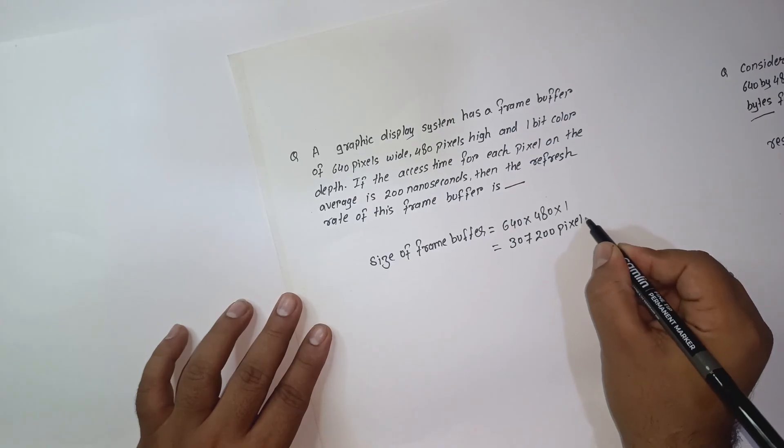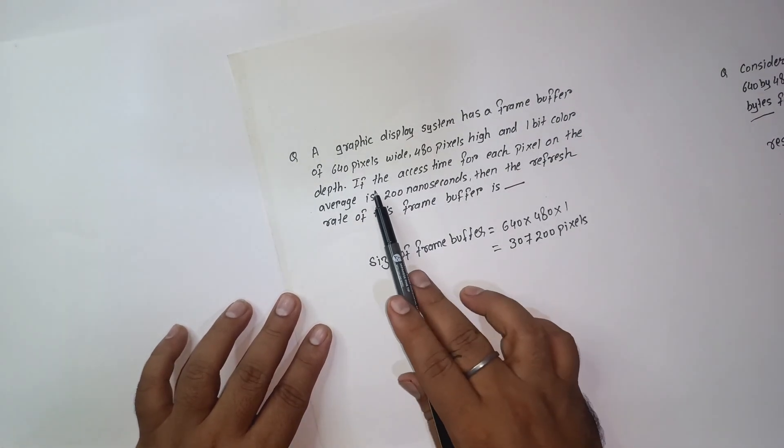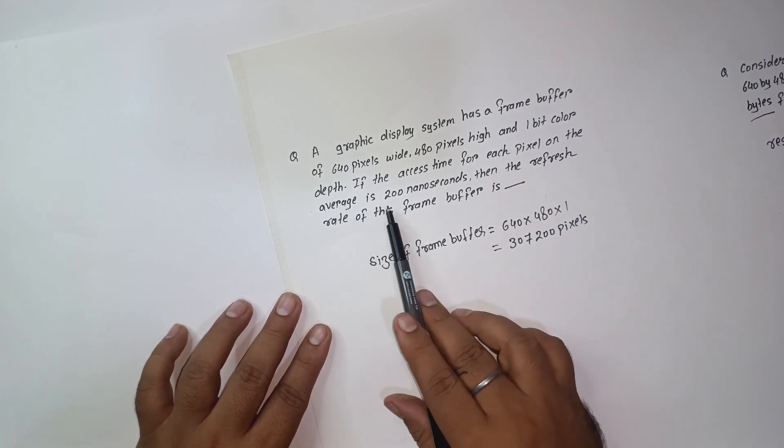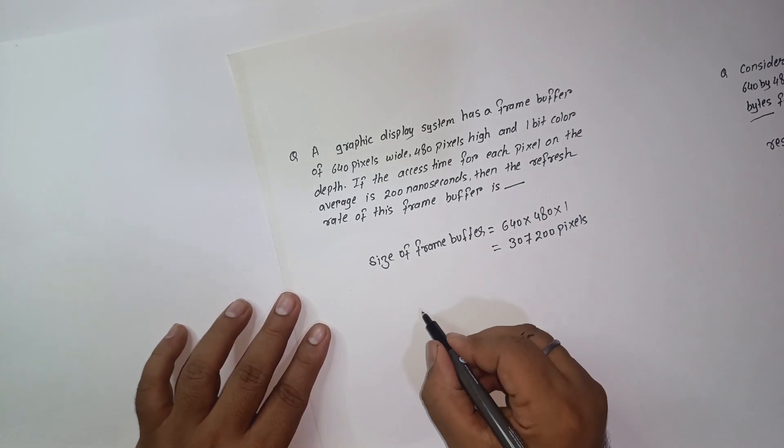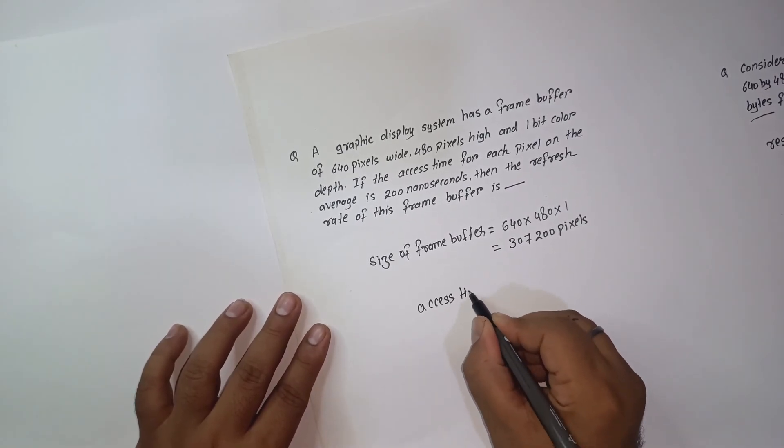Now the access time of each pixel on the average is 200 nanoseconds. So access time per second, now let's try to calculate.